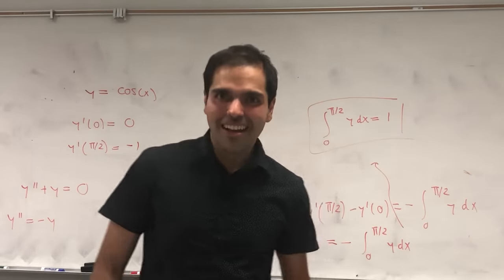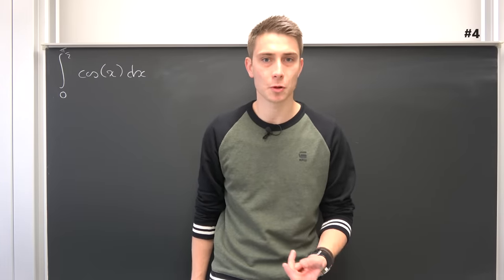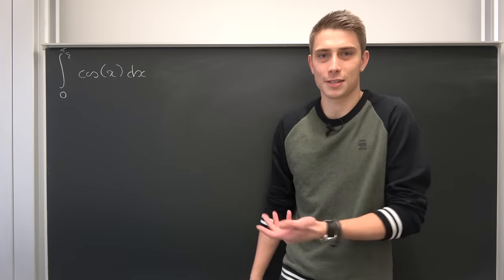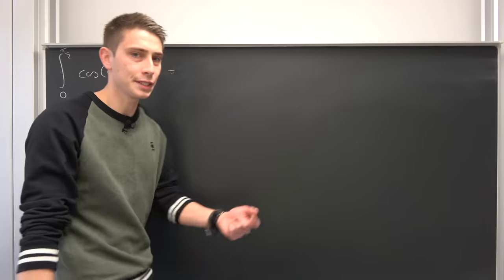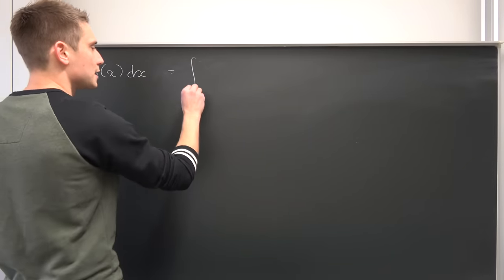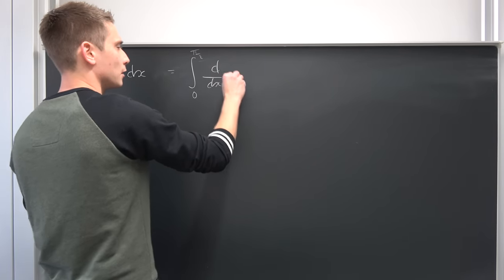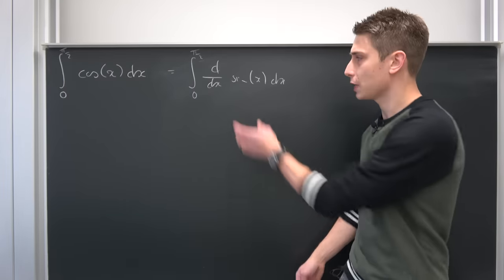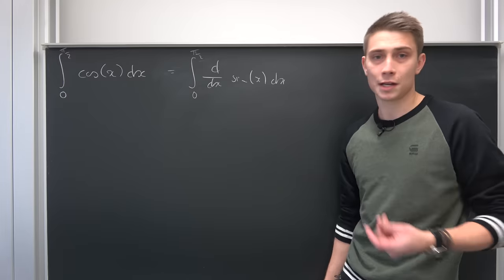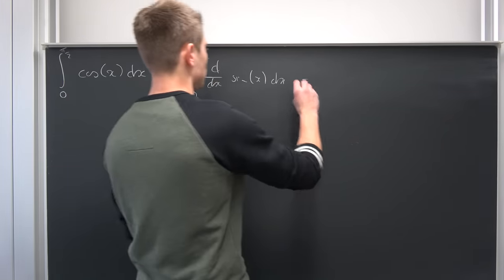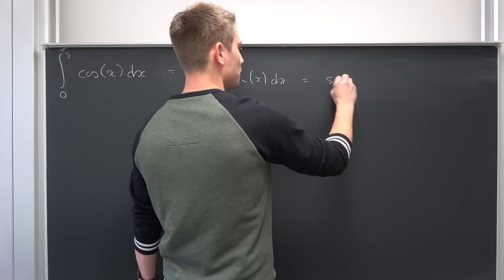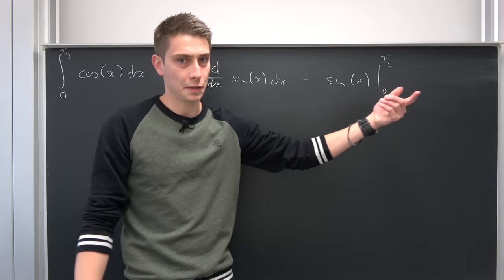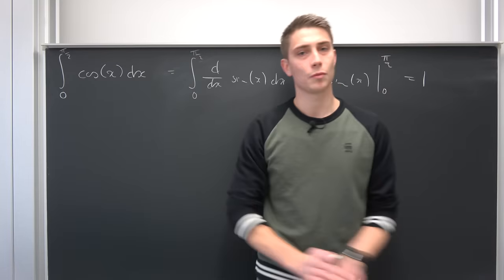This gives -1 - 0 = -∫y dx, so ∫y dx = 1. This works not only for cosine but for any function satisfying this differential equation where y'(0) = 0 and y'(pi/2) = -1. This next method might seem obvious: we take for granted that the derivative of sine is cosine, so we rewrite the integral as ∫d/dx[sin x] dx from 0 to pi/2. Integrating a differentiated function just gives the function itself, so this equals sin x evaluated from 0 to pi/2, which is 1 - 0 = 1.